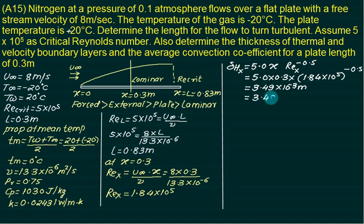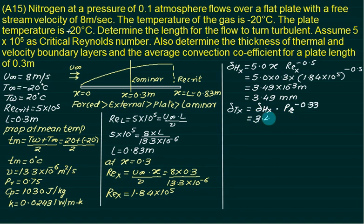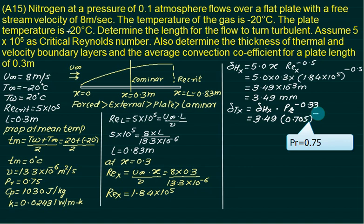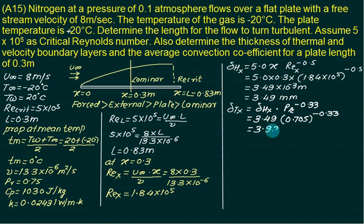The hydrodynamic boundary layer thickness is 3.49 mm. From the same laminar flat plate table, the thermal boundary layer thickness is: delta_tx = delta_hx × Pr^(−0.33) = 3.49 × (0.75)^(−0.33). This gives delta_tx = 3.92 mm.